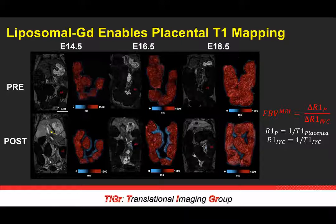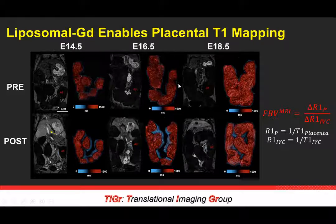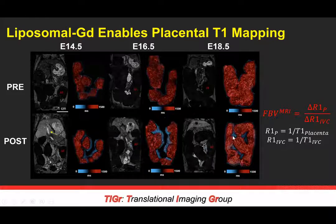What does this look like at different time points? We looked at three time points in the latter half of gestation: day 14, 16, and 18 — remembering day 21 is typically the end of gestation. In the top row I have pre-contrast images and post-contrast images as volume renderings of T1 values calculated for the uterine tract. Once we administer contrast, you can see in these volume renderings how the placenta lights up — now shown as this light blue area — as the T1 time reduces due to signal enhancement from the liposomal contrast.